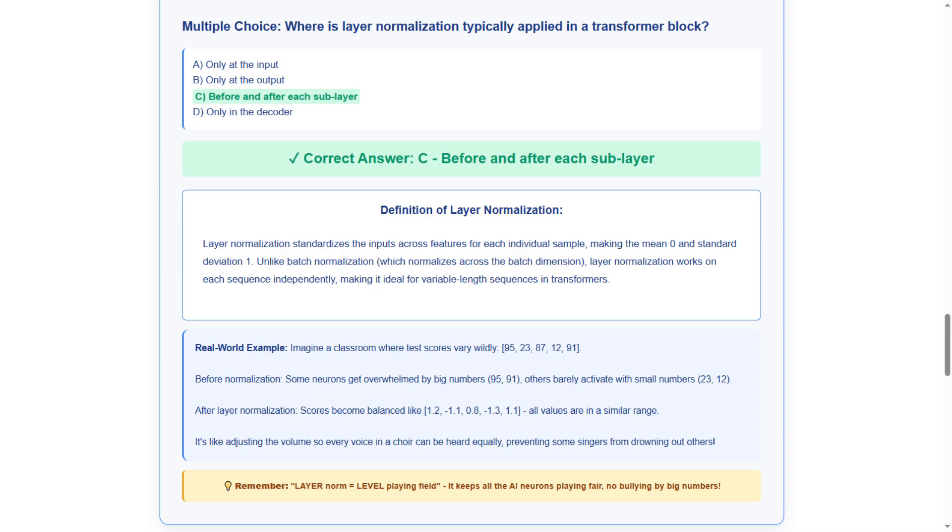Unlike batch normalization, which normalizes across the batch dimension, layer normalization works on each sequence independently, making it ideal for variable length sequences in transformers. Simply put, it's individual sequence balancing.